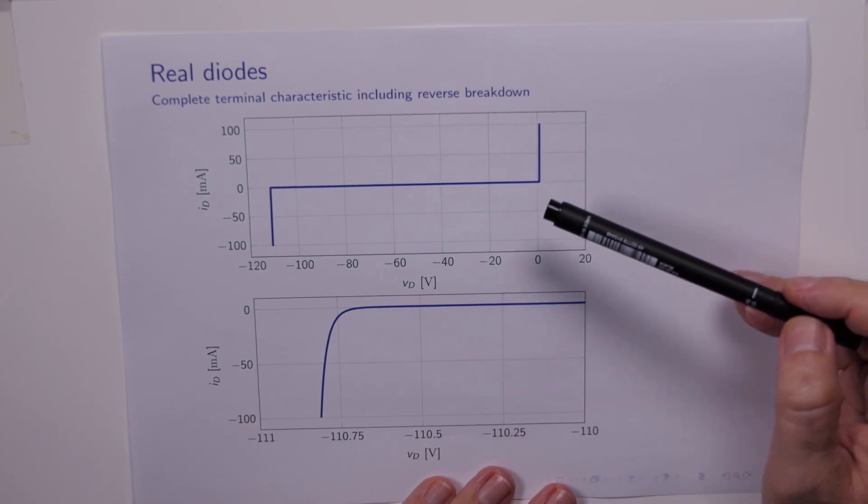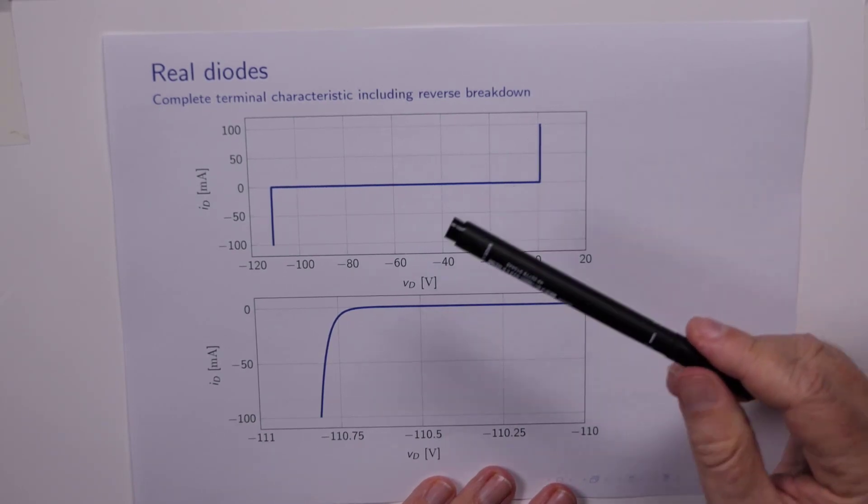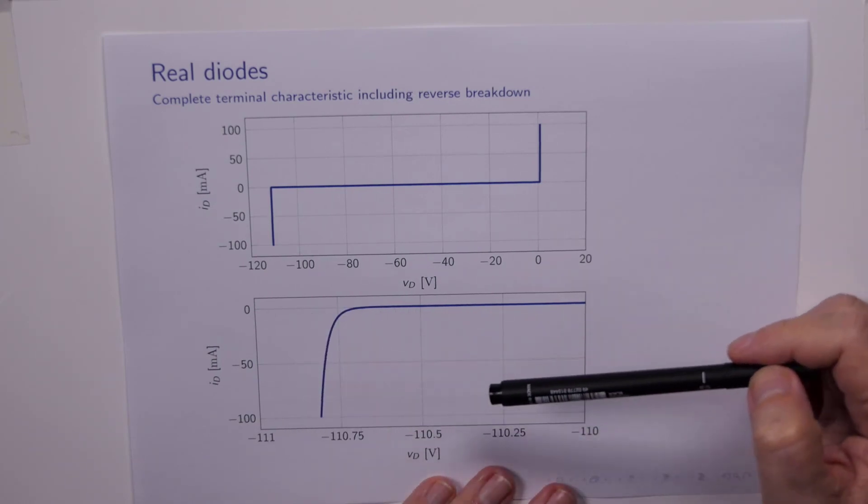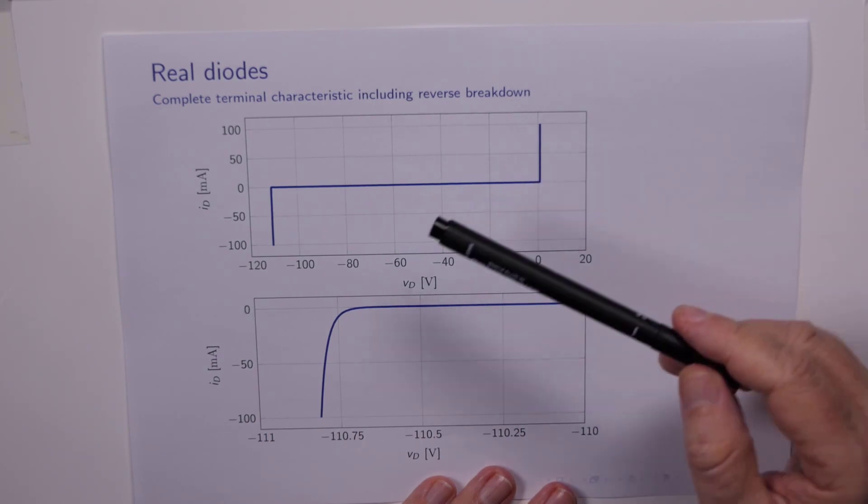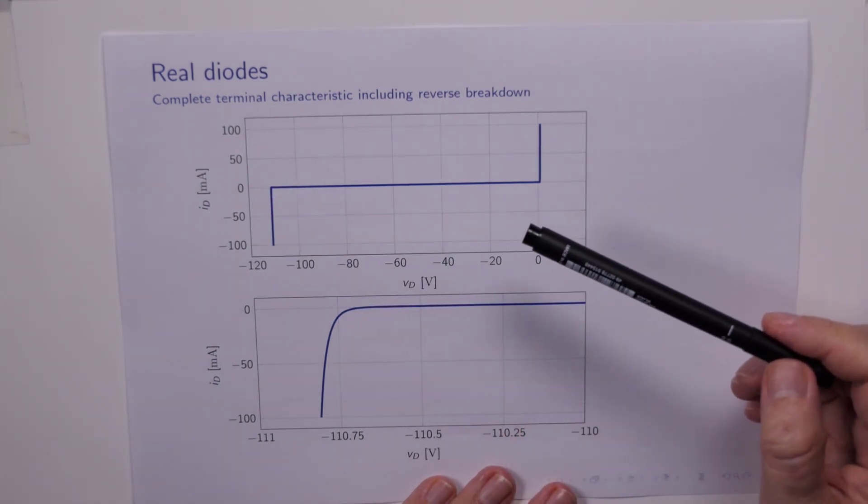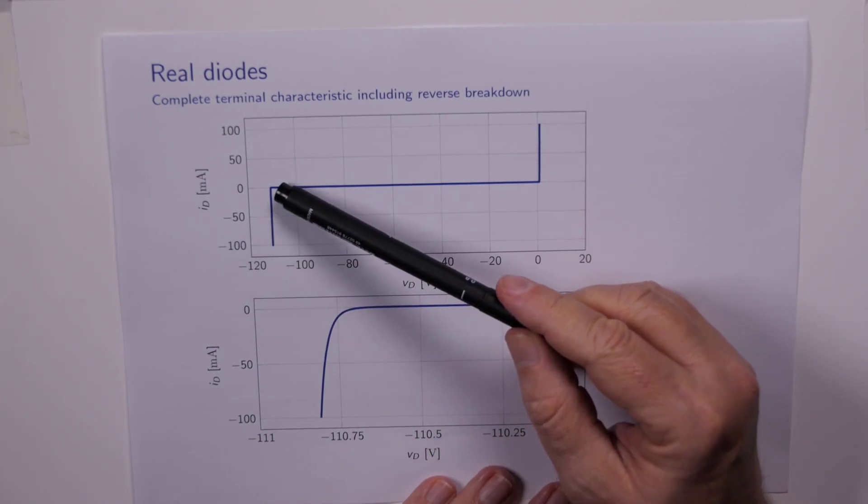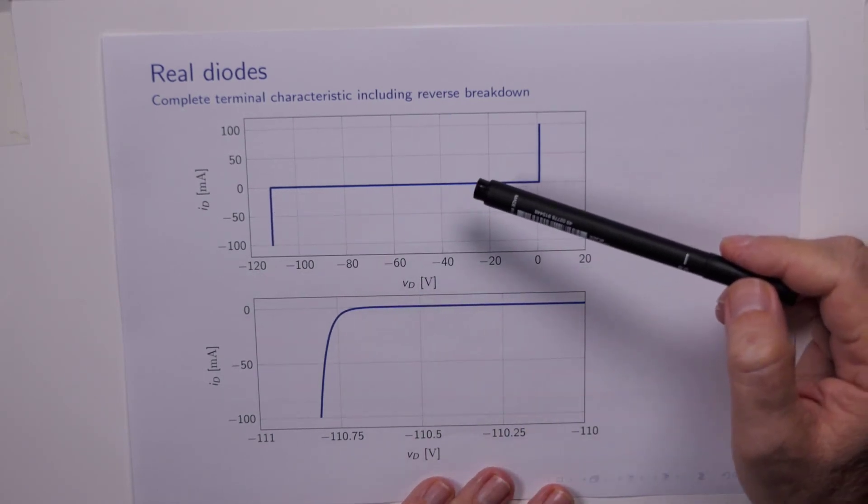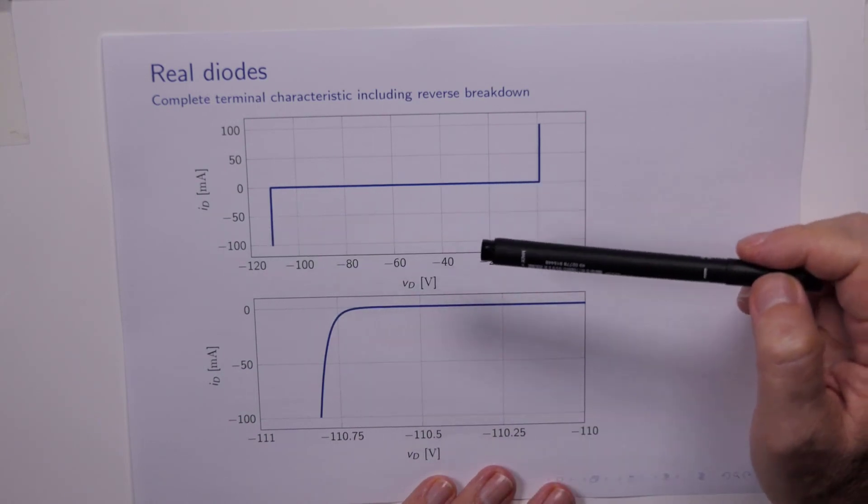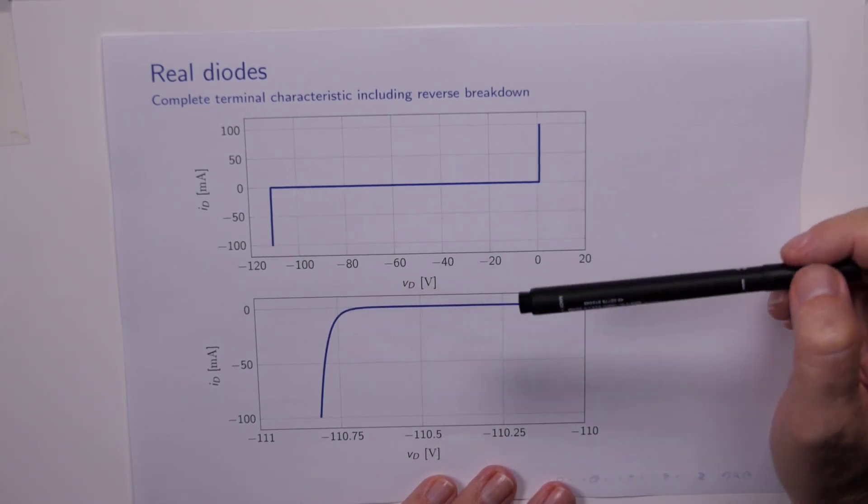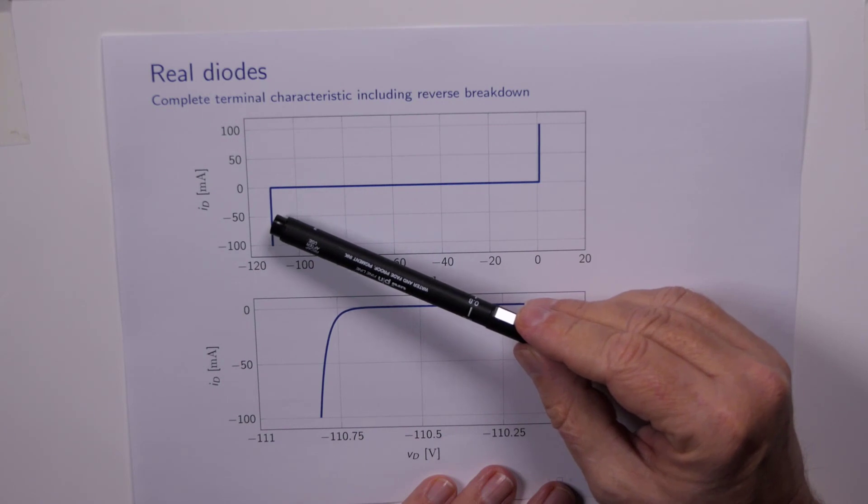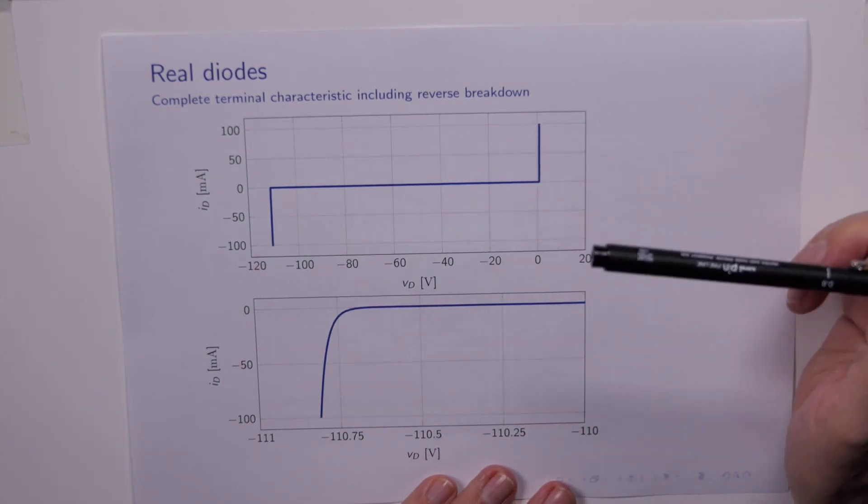Later on, when we look at Zener diodes, we will actually exploit this sort of behavior. Because although the forward voltage drop of 0.7 of a volt is fixed, it's fixed by the physics describing the energy levels in the silicon lattice, this reverse breakdown is controllable. It's controllable in the sense that we can actually program the voltage at which this occurs, and we can also ensure that the breakdown is not catastrophic. So we can have the diode go into breakdown and come out of breakdown without any trouble. And the big use of that phenomenon is as a voltage reference.